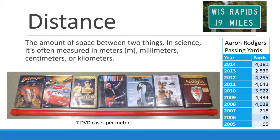Sometimes we use other units. Aaron Rodgers measures his passing stats in yards. Our cars mostly measure our distances in miles. The red bar that you see on the screen is one meter, or as close to one meter as I can make it. If anyone ever asks how many DVD cases lined end to end will cover one meter, you'll know to say seven.